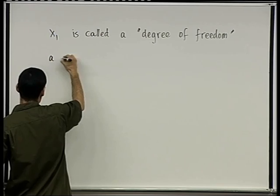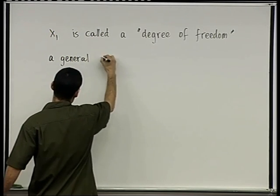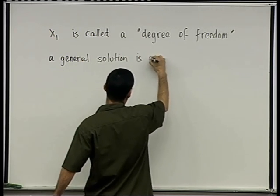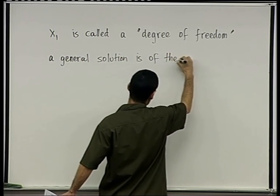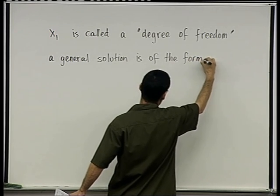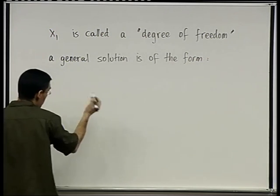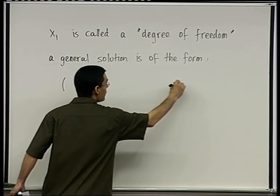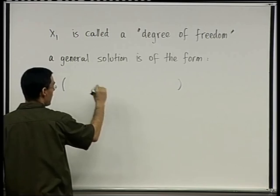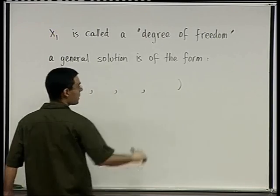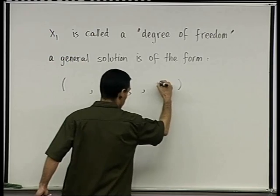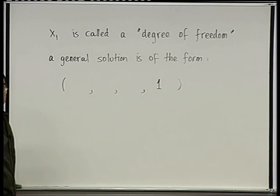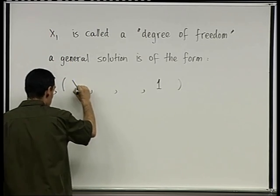A general solution is of the form: remember a solution, I'm going to still write it as a vector or an array of four entries: x1, x2, x3, and x4. x4 has to be 1. x1 is our degree of freedom, it can be arbitrary, so I'm just going to leave it as x.